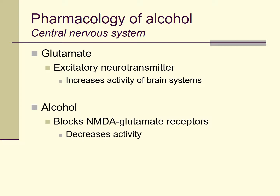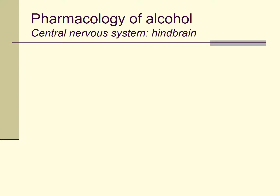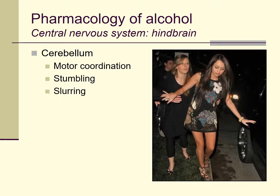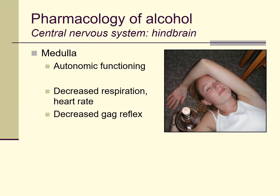How does this play out in different parts of the brain? In the hindbrain and brain stem, areas like the cerebellum are affected — it becomes less active and less able to do what it's supposed to do, so a person who's drunk will tend to lose motor coordination, stumble, and slur their words. Elsewhere in the hindbrain, in the medulla — an area that governs a lot of your autonomic functioning — there'll be decreased respiration rate and a decrease in the gag reflex. So someone drinking a lot of alcohol may more easily slip into a state where they're not breathing deeply, their heart isn't beating steadily, and they may lose the gag reflex.